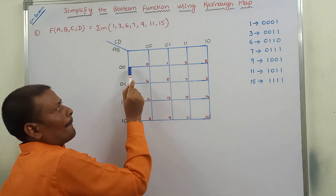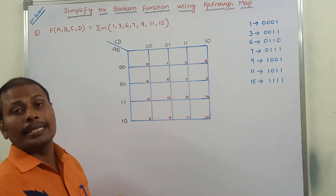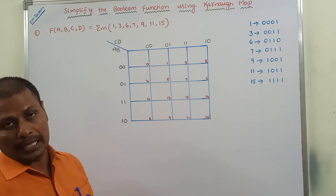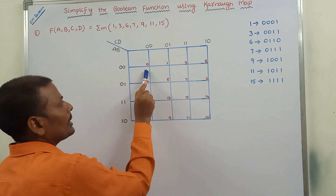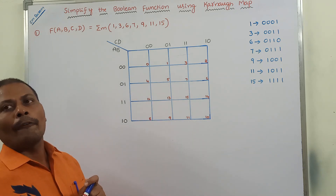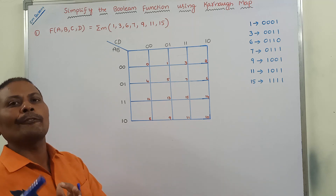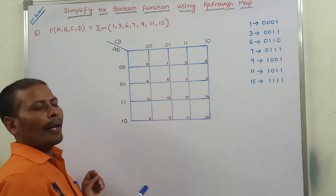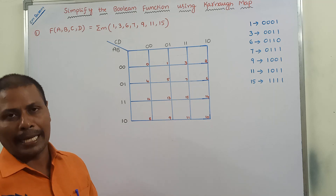In the corner of every cell, we have to write one digit called the cell number. That cell number is formed by taking the horizontal number and vertical number to get a 4-bit binary number. For that binary number, we find the equivalent decimal number, and that decimal number is written in the corner of every cell as the cell number.